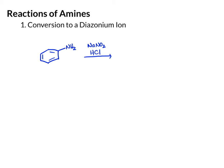The first involves aryl amines, where we used NaNO₂ and HCl to convert them to diazonium ions. So in this case, the amine gets converted into a diazonium ion. If we draw it out completely, we have N triple bond N, a positive on this nitrogen, and Cl⁻ as a counter ion. We used that in diazonium ion displacement reactions, where we coupled various groups onto the aromatic ring.